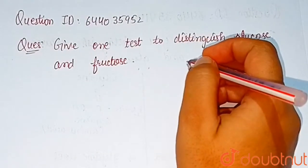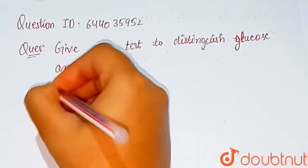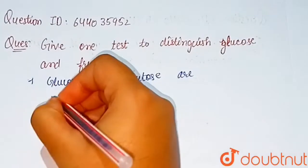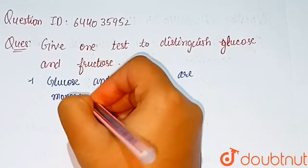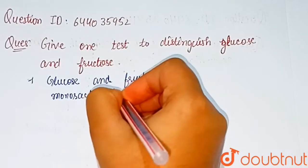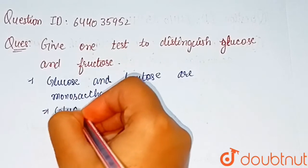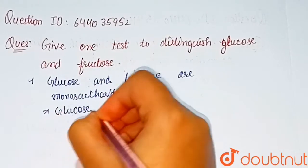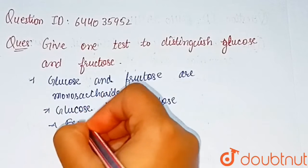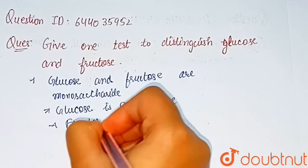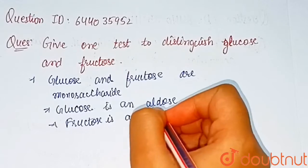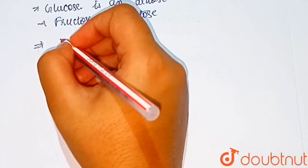Our question is: give one test to distinguish glucose and fructose. First, we know that both glucose and fructose are monosaccharides, but glucose is an aldose and fructose is a ketose. We use the bromine water test to distinguish glucose and fructose.